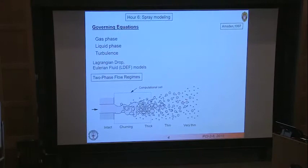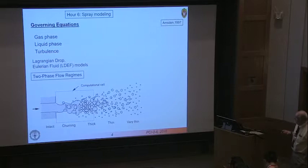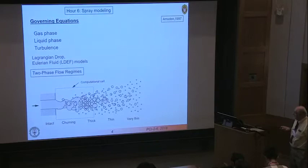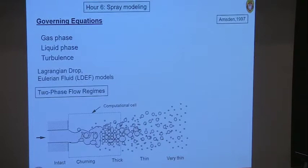The idea is that it's a two-phase flow. You have liquid in the form of droplets in your simulation, working together with the gas phase, which is treated using an Eulerian approach. The Lagrangian approach means you follow the motion of individual particles and see them as sources of mass, momentum, and energy, which then enter into the gas phase equations.